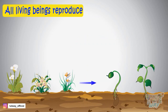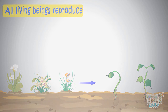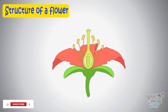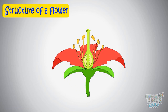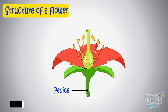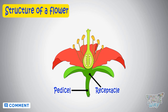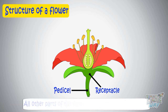Let's see how these seeds are produced. We learned the structure of a flower in our last assignment. This is the pedicel, which is a green color stalk. Then this broader part is the receptacle, and all other parts are arranged in four whorls.